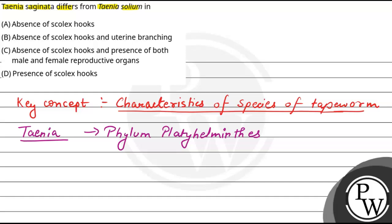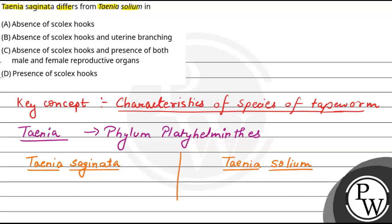If we talk about differences, Taenia saginata on the left side — its common name is beef tapeworm. Whereas Taenia solium on the right side is called pork tapeworm.